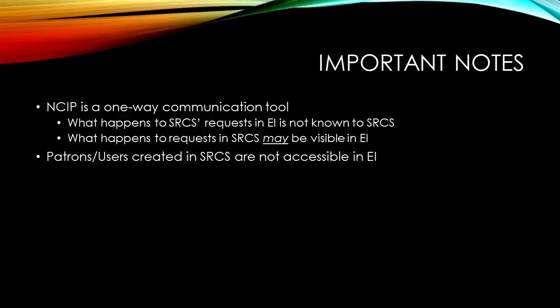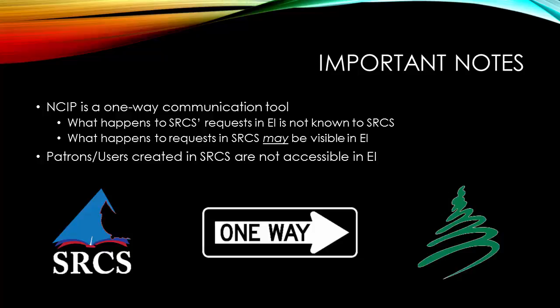A couple of quick notes about NCIP: it is a one-way communications tool. CERCS can tell Evergreen circulation information, but Evergreen cannot tell CERCS anything about circulations. Patrons created manually in CERCS will not be created in Evergreen, so transactions for those users may require guest handling in Evergreen.